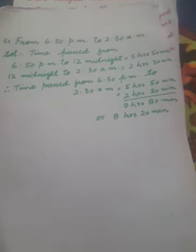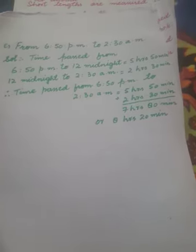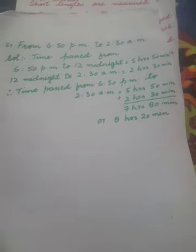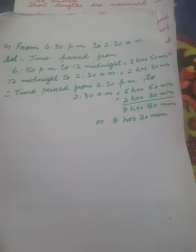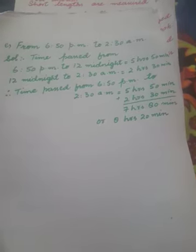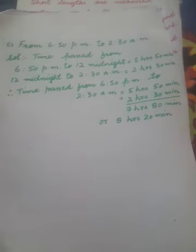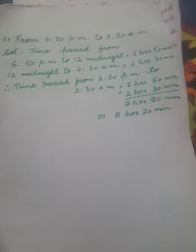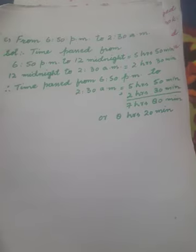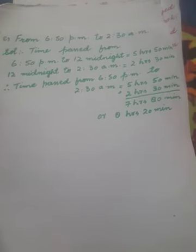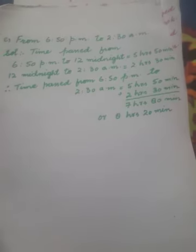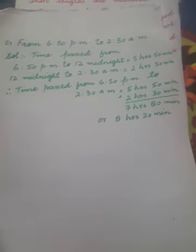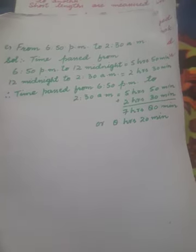From 6:50 PM to 2:30 AM — you will do it the same way. From 6:50 PM to 12 midnight, 5 hours 10 minutes have passed. Then from 12 midnight to 2:30 AM, 2 hours 30 minutes have passed. So the time passed from 6:50 PM to 2:30 AM is 5 hours 10 minutes plus 2 hours 30 minutes.